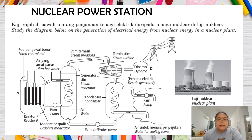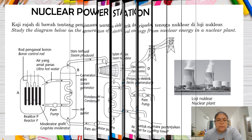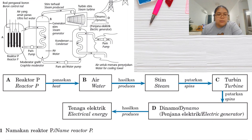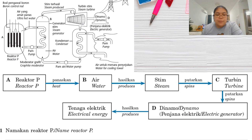Now we look at the nuclear power station diagram. Part A is the reactor. After that it goes to the heating stage. Parts C and D should be the generator. The flow is: reactor P → heat → water → steam → spins the turbine → turns the dynamo → generates electricity. Part A, reactor P, is named the nuclear reactor.